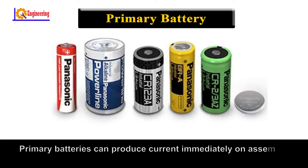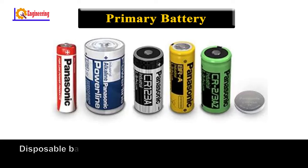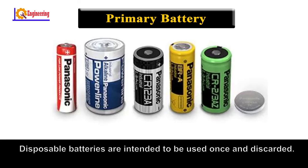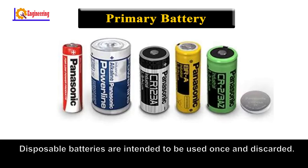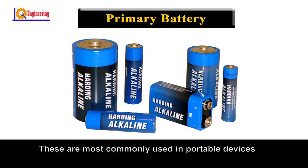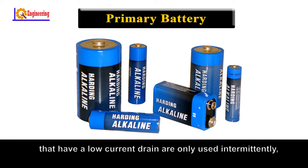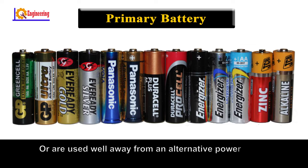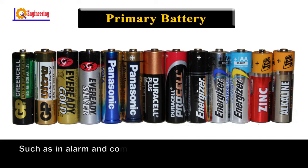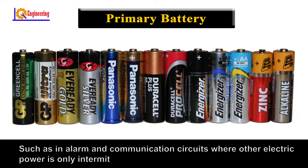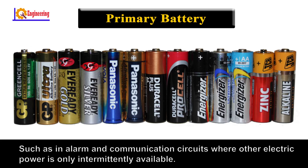Primary batteries can produce current immediately on assembly. Disposable batteries are intended to be used once and discarded. These are most commonly used in portable devices that have low current drain, are only used intermittently, or are used well away from an alternative power source, such as in alarm and communication circuits where other electric power is only intermittently available.